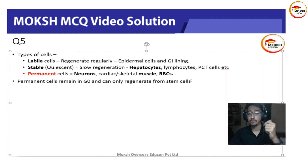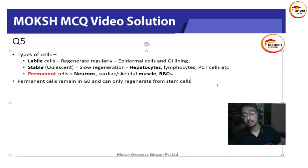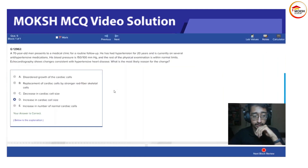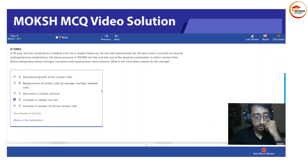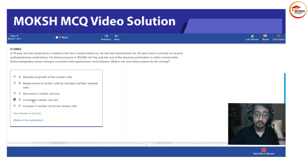The only way you get new cardiac cells is from stem cells — a cardiac cell cannot divide. So in this question, you might have been confused between increase in cardiac cell size versus increase in number of normal cardiac cells. But since cardiac cells cannot divide, increase in size is the correct option.